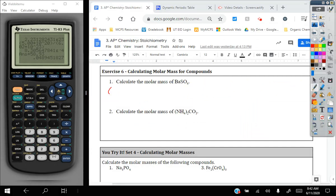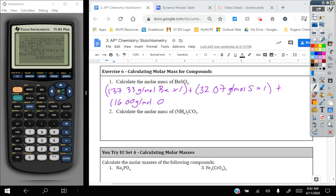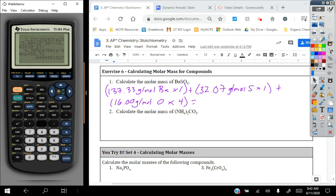So on the periodic table, barium is 137.33. So I got 137.33 grams per mole of barium. Technically, I need to multiply this by one because there's one barium in there, but that just keeps it the same. For sulfur, I have 32.07 grams per mole of sulfur, again, times one because there's one of them, plus 16.0 grams per mole for oxygen. This one we have to multiply by four because there's four of them.